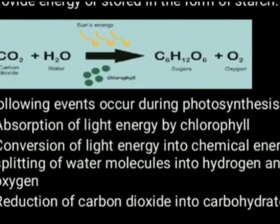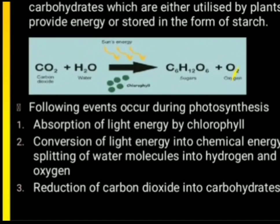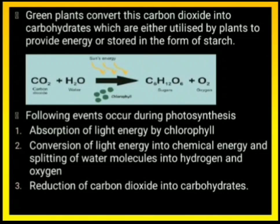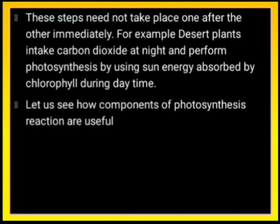You may have already seen this reaction: when CO2 combines with H2O in the presence of sunlight and chlorophyll, it forms sugar or starch — C6H12O6 — plus oxygen. Now, what events occur during photosynthesis? Step 1: absorption of light by chlorophyll. In the leaves of green plants, chlorophyll first absorbs the energy of sunlight. Step 2: this light energy is converted into chemical energy, by which water molecules are split into hydrogen and oxygen. Step 3: reduction of carbon dioxide into carbohydrates — hydrogen is added to carbon dioxide to form carbohydrates. These steps do not necessarily happen immediately. An example is desert plants, which can perform photosynthesis even at night time.